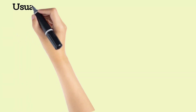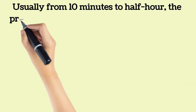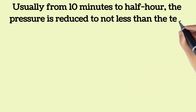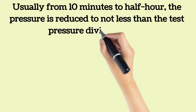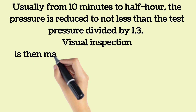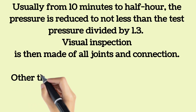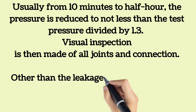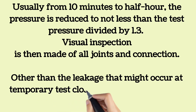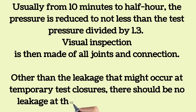Following the application of the hydrostatic test pressure for a specific amount of time, usually from 10 minutes to half an hour, the pressure is reduced to a value not less than the test pressure divided by 1.3. A visual inspection is then made of all joints and connections. Other than leakage that might occur at temporary test closures for openings intended for welded connections, there should be no leakage at the time of visual inspection.